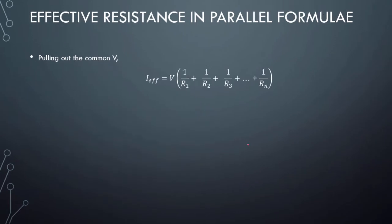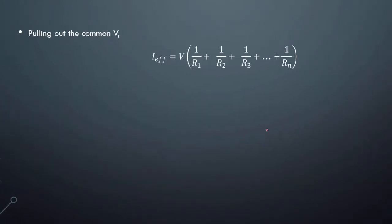What we can do is further manipulate the formula by just pulling out V, the common term. And since R effective is of course V over R effective, which we want to find, if you compare these two by replacing this with this, you find you have this.